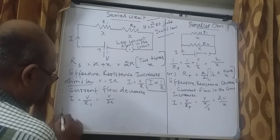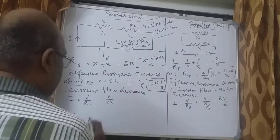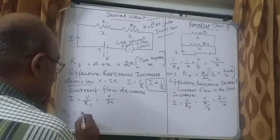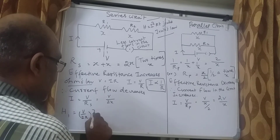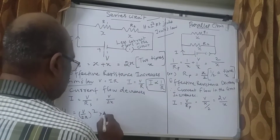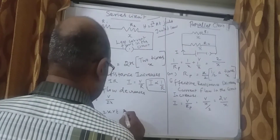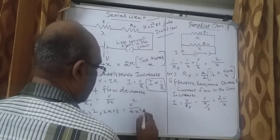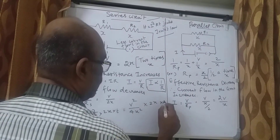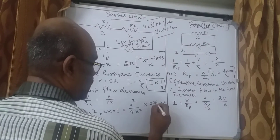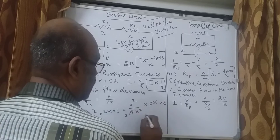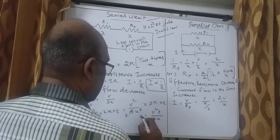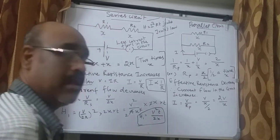Now let us apply the formula for the heating effect of current. The heat produced in the series circuit H1 = I² × R × T = (V/2X)² × 2X × T = (V²/4X²) × 2X × T. Simplifying, X cancels and we get H1 = V²T / 2X.